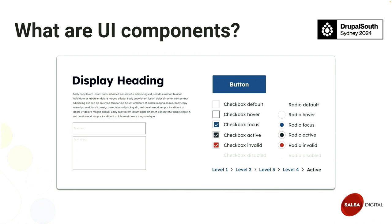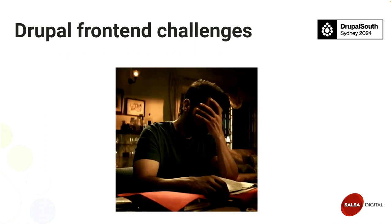In simple terms, components are self-contained units of code that encapsulate the specifics of functionality or user interface elements. By using components, the good thing is you can reuse them anywhere in your project. No matter how small, if you want to create a consistent page with a different set of components, you can use them.